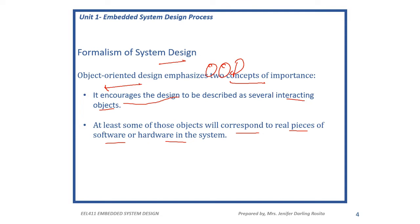The formalism of system design emphasizes two concepts. First, it encourages the design to be described as several interacting objects — these interactions should take place inside a design so that it can work automatically without human intervention. Second, to correspond to real-time pieces and to communicate with hardware as well as software components, object-oriented design is very important.